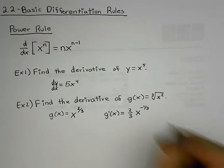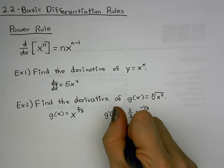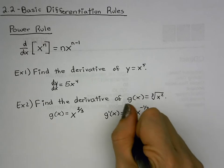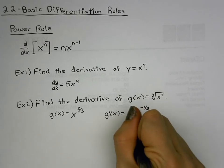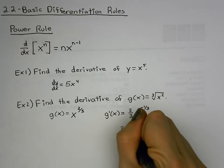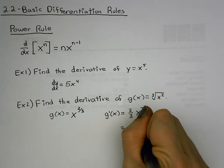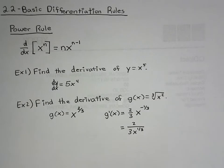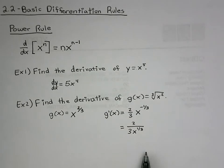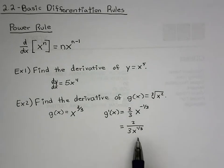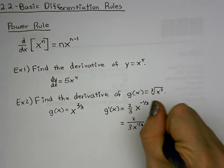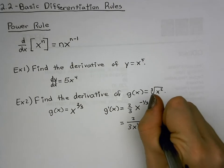The only other thing you could do is rewrite this so we don't have a negative exponent, or rewrite x to the one-third as a cube root — either would be a viable option.